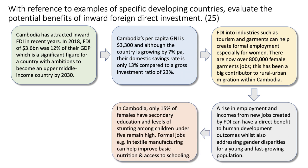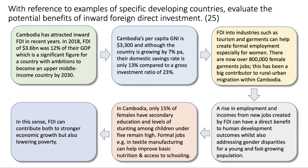In Cambodia, less than one girl in six has secondary education and levels of stunting among children under five are high. Formal jobs and waged labour — for example in textile manufacturing — can help improve basic nutrition and access to schooling. In this sense, FDI can contribute both to stronger growth but also to lowering poverty. This second point is really about the potential benefit in terms of development outcomes: formal wage labour, gender employment opportunities, improved schooling and nutrition.